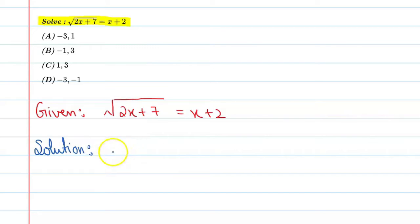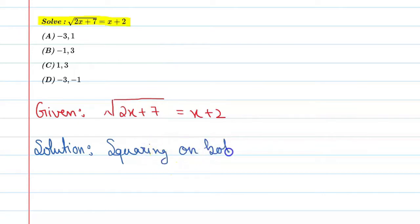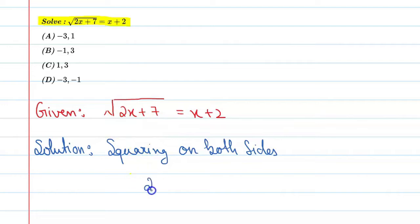Squaring on both sides. When we square, these values we will get: 2x plus 7 equal to x plus 2 whole raise to power 2.